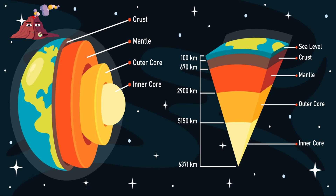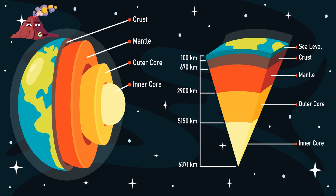The Earth has four main layers: the crust, the mantle, the outer core, and the inner core. The crust is the outermost layer of the Earth, and it's the layer that we live on. It's like the Earth's skin and is the thinnest layer. The crust is made up of different types of rock, and it's broken up into pieces called tectonic plates.